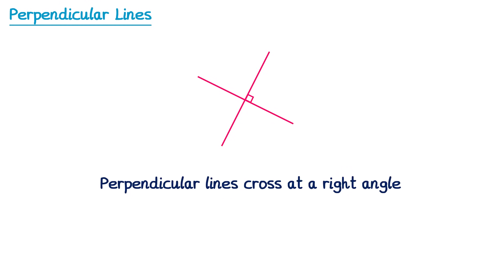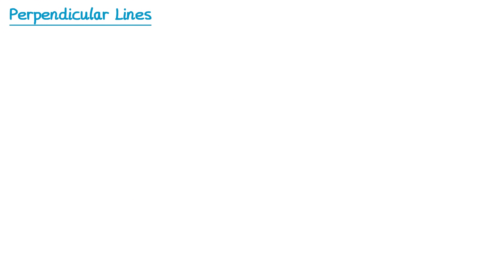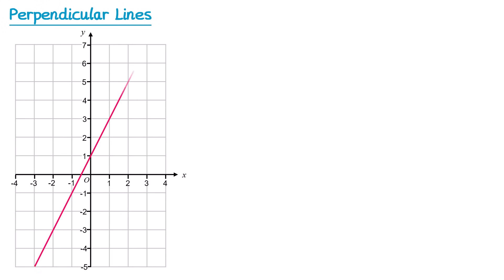But what about their gradients? That's the main point of this video. Let's take a line where we know its equation, like this one here. The equation of this line is y equals 2x plus 1. Now if we draw a line that's perpendicular to this line, making it cross at the same point on the y-axis — so at 1 — these two lines are perpendicular because there's a 90 degree angle between them.